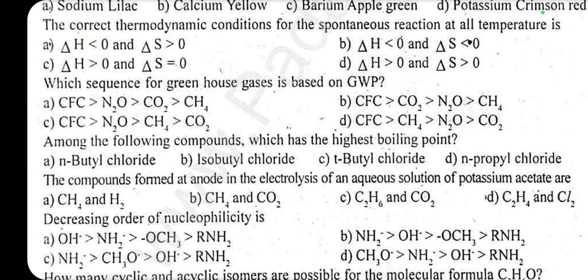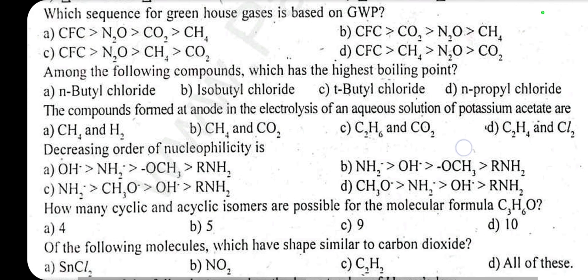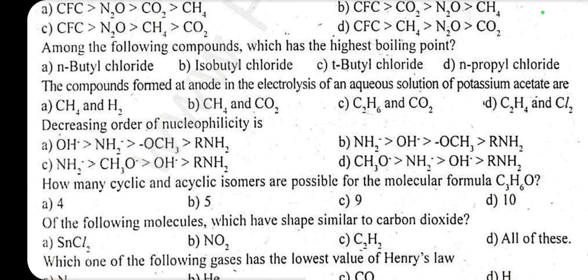Among the following compounds, which has the highest boiling point? Among isomers, n-butyl chloride has the highest boiling point. The compound formed at the anode in the electrolysis of an aqueous solution of potassium acetate: answer C — ethane and carbon dioxide.